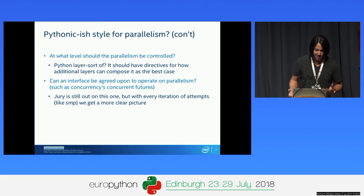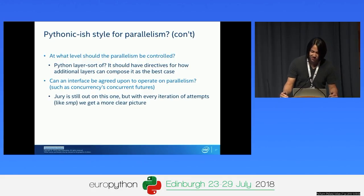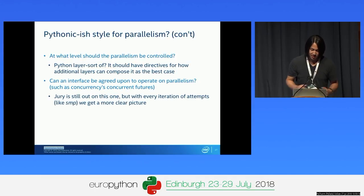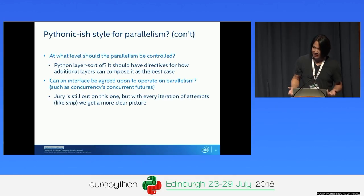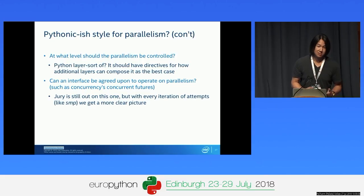At what level should parallelism be controlled? Maybe the Python layer, but the challenge is it needs directives for how additional layers can compose it—some type of composing directive would be useful. Can an interface be agreed upon? The jury's still out, because with every iteration we learn something new—something that works and something that doesn't. The Python community is still in that space, and I urge you, if you're in this space, to continue pushing and seeing what makes sense.